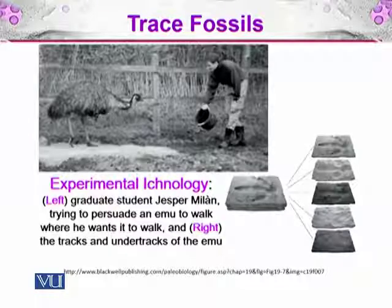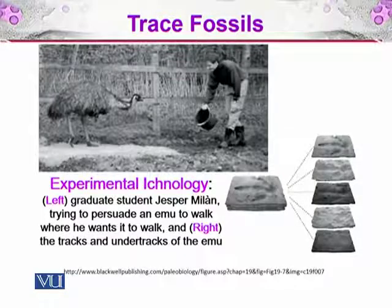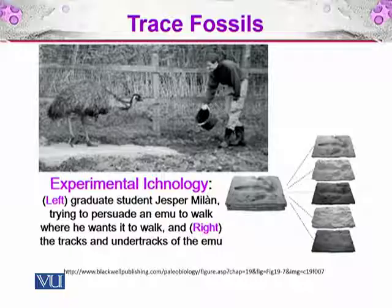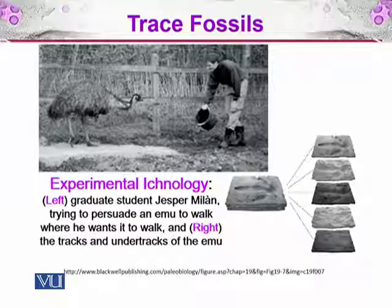Here you can see experimental ecology — ecology practiced as an experiment. On the left side, you can see graduate student Jasper Millan trying to persuade an emu to walk where he wants it to walk, and on the right side you can see the tracks and undertracks of the emu. This student is making tracks of a living emu to study how the impression of its feet will turn out, and on the basis of those results, he will study trace fossils of the same type of organisms found in different parts of the world.